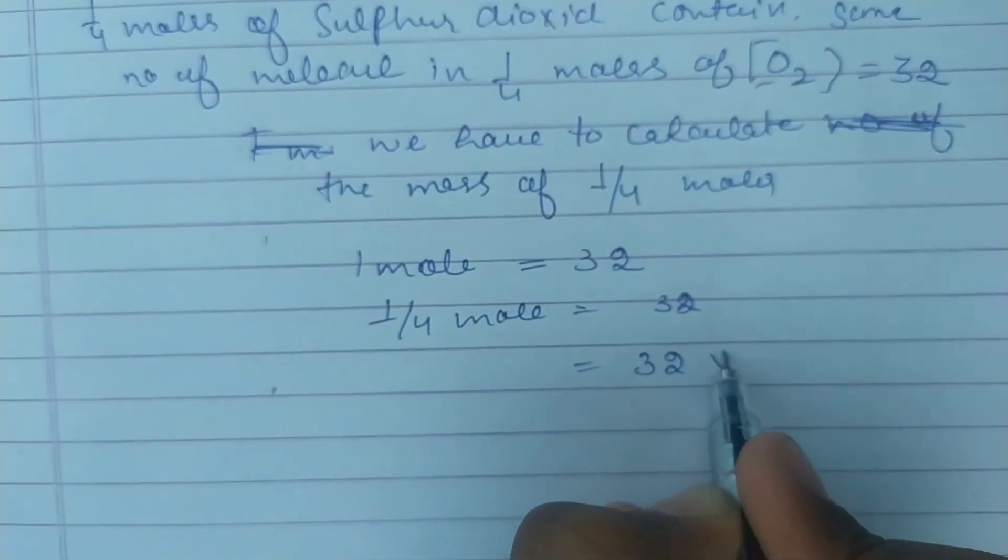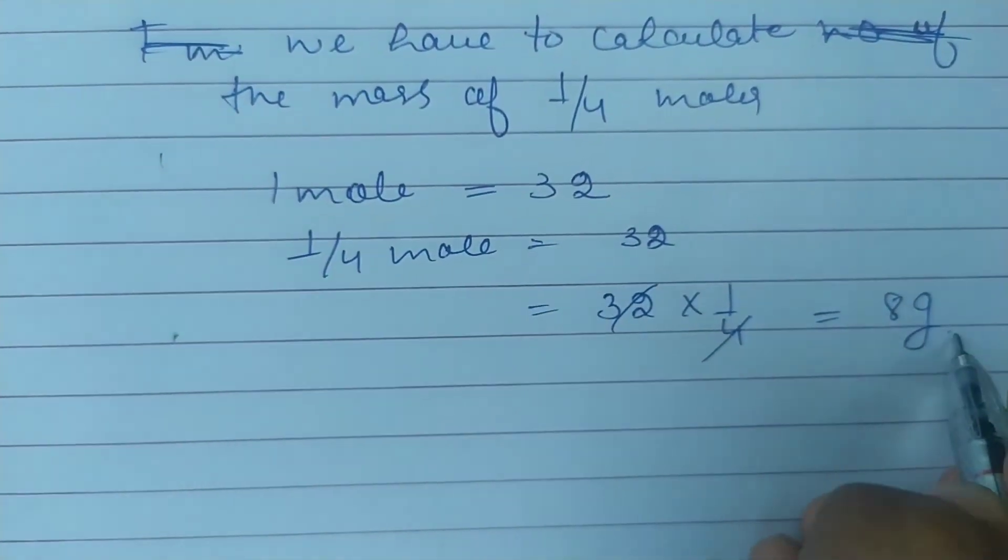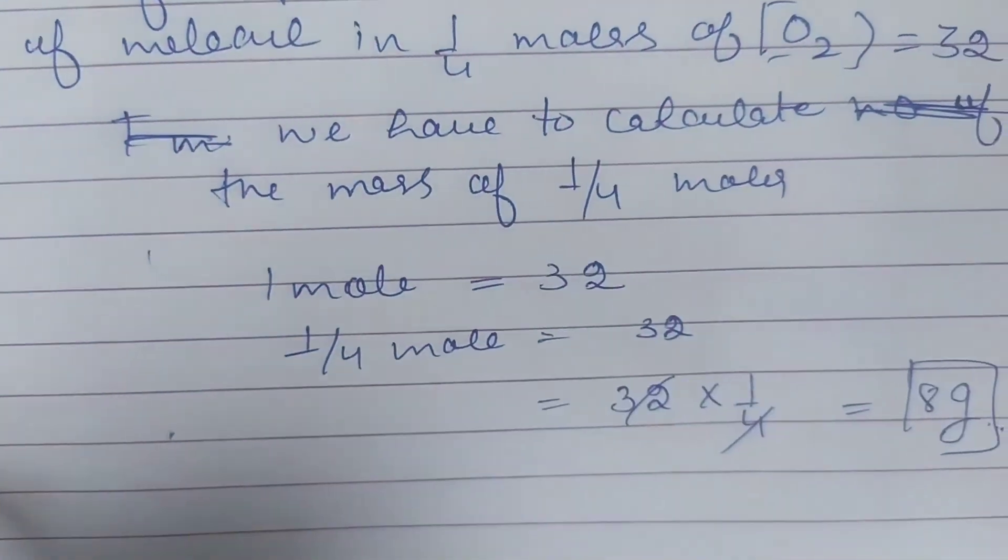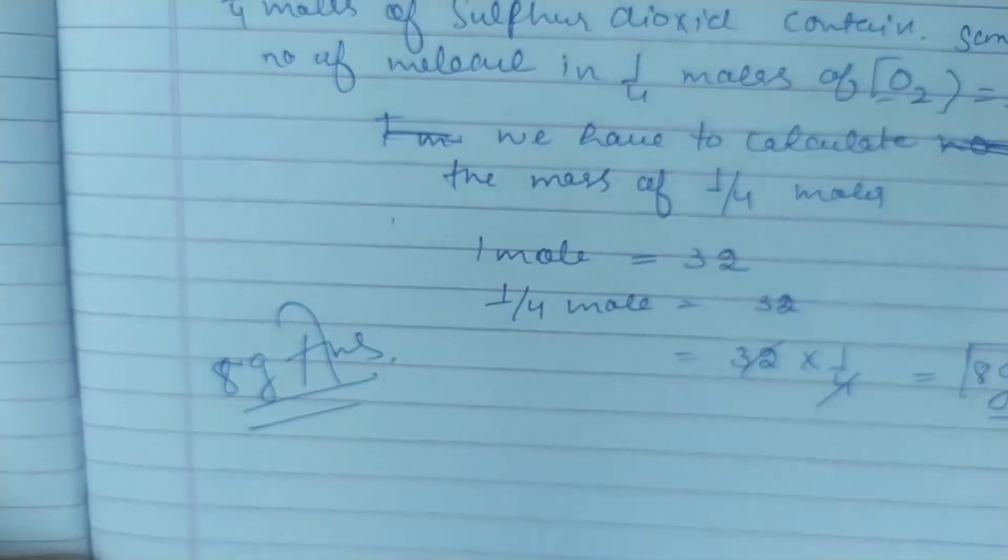32 divided by 1, or 32 times 1 divided by 4, equals 8 grams. So the mass of oxygen molecules is 8 grams.